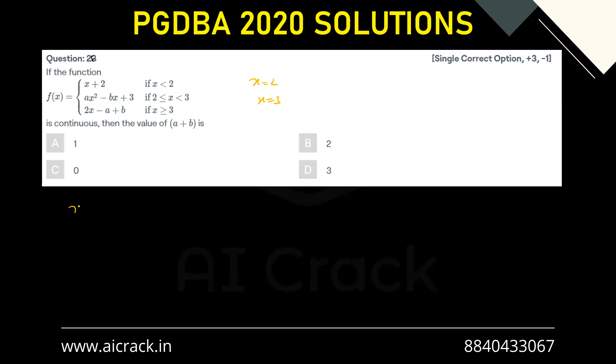So for x equals to 2, LHL and RHL - the LHL over here would be 2 plus 2, and that would be 4. And RHL over here would be RHL equals to f of 2, that should be equals to